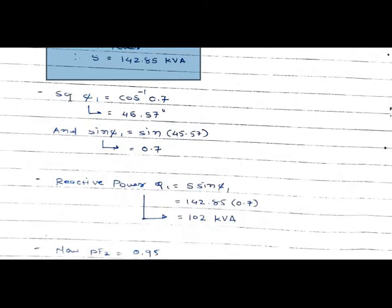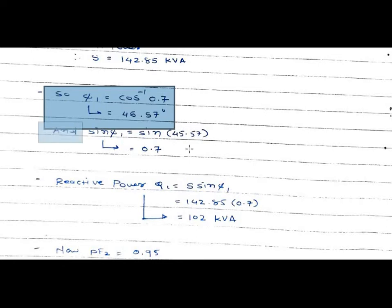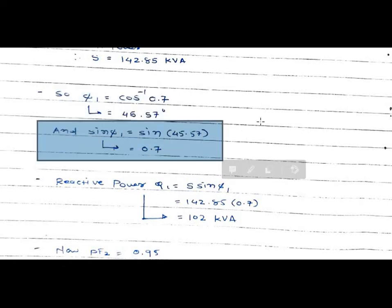Now we find the power factor angle for the first case, the 0.7 power factor. Phi 1 is given by cos inverse of 0.7. From this equation, we get the value of phi 1 equal to 45.57 degrees. From this value of phi, we can find the value of sine phi 1.